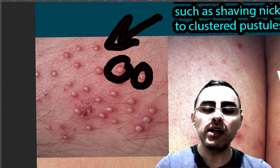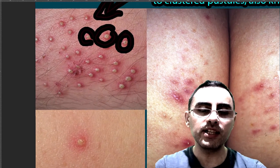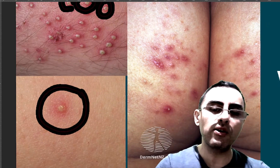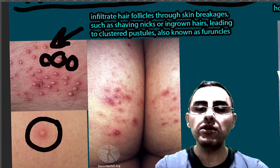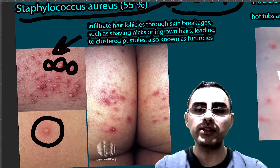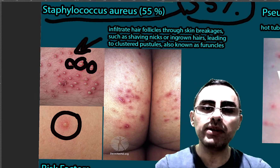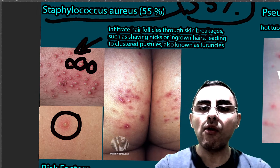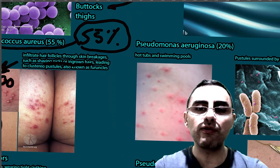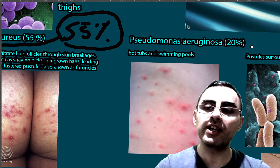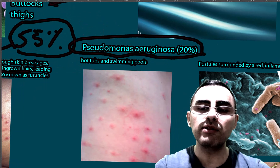The pus-filled pustules can be seen, but sometimes they can be solitary — on the legs, for example, or on the thighs, hips, or buttock region, which is also common. This usually happens because of shaving or ingrown hairs.